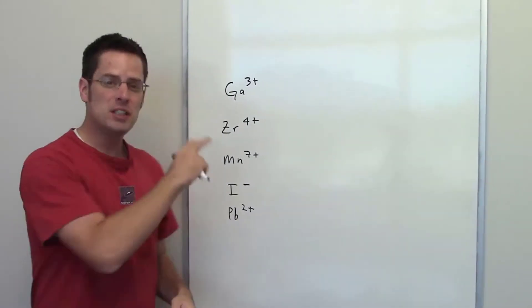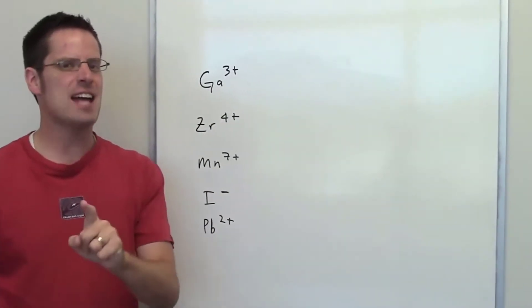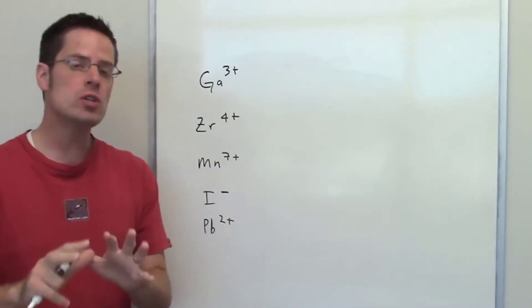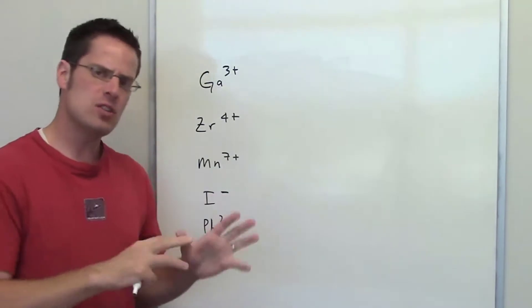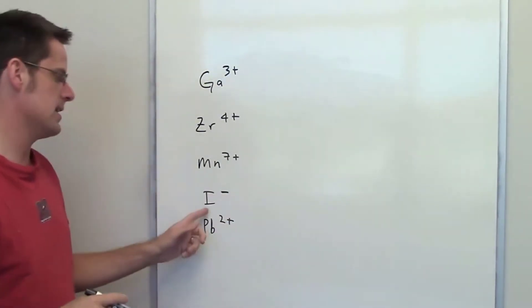This question gives us a bunch of different ions and asks us to determine what neutral atom is isoelectronic with each of these. To answer this, I'd like to begin with the easiest one, which is iodide.